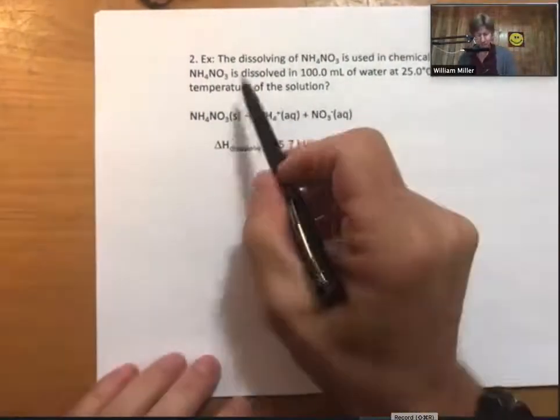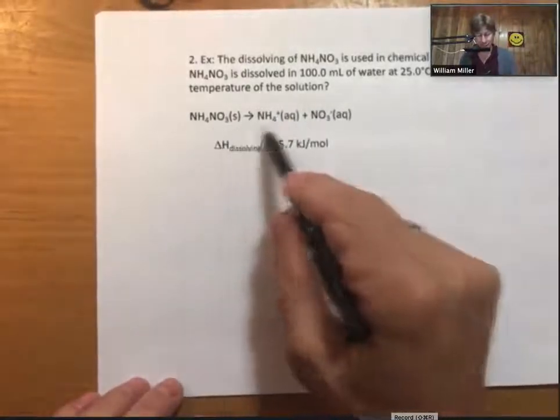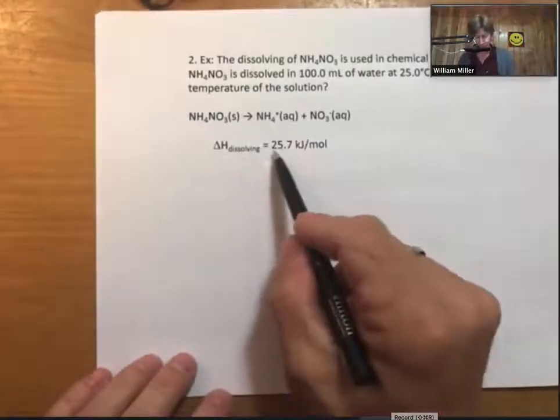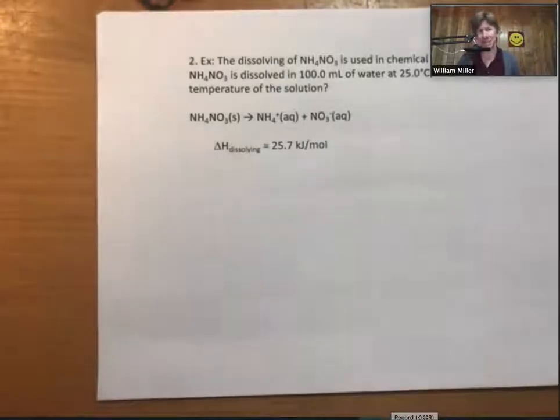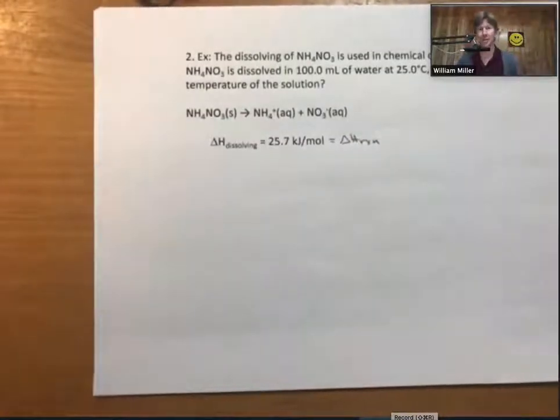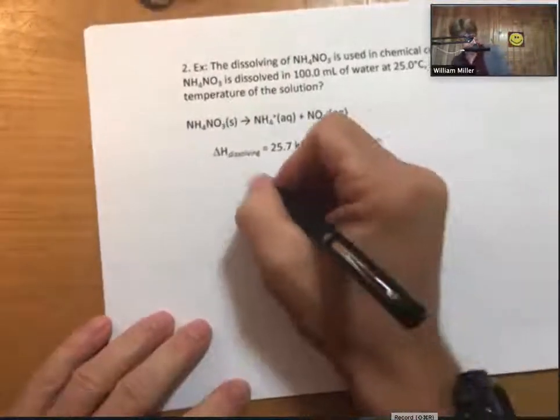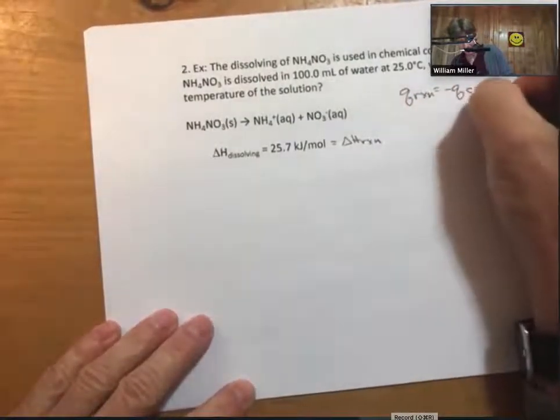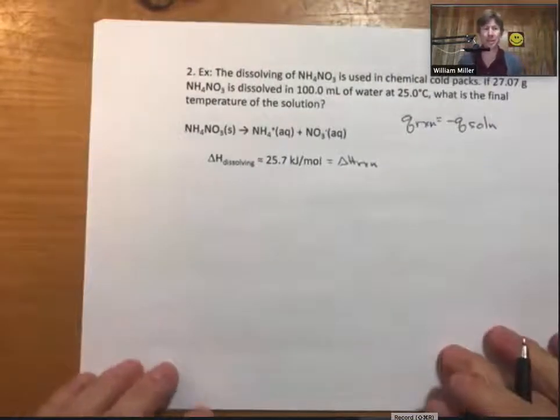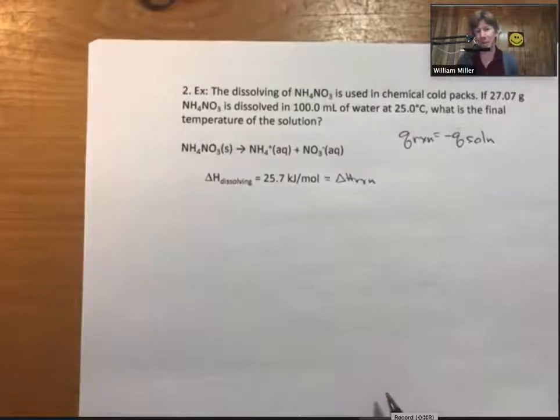This is another example: the dissolving of ammonium nitrate is used in chemical cold packs. If a certain number of grams is dissolved, we've been given the dissolving reaction and delta H dissolving. This is a delta H reaction for a specific type of reaction, so we've used the subscript dissolving, but we could have easily used delta H reaction. Dissolving is a specific example of a type of reaction. Now, there is a reaction.